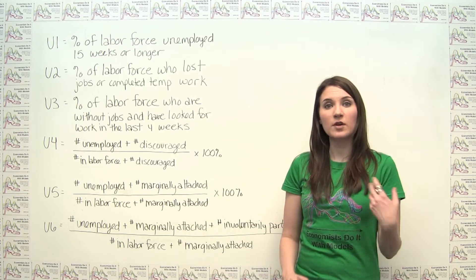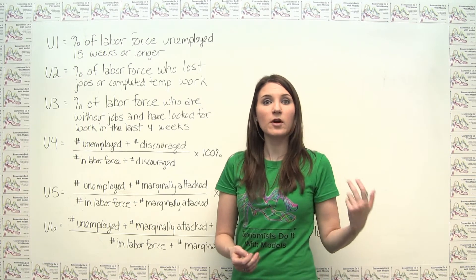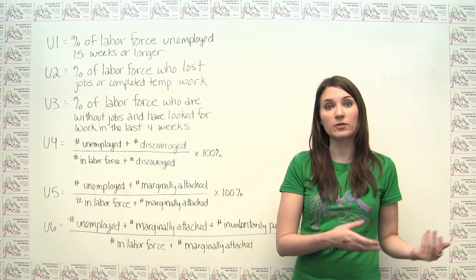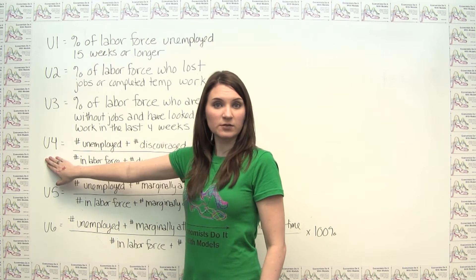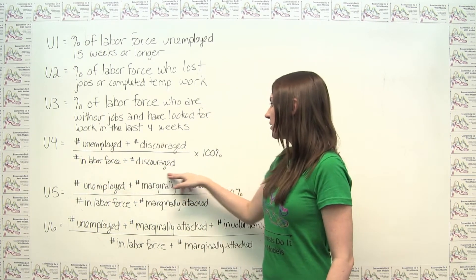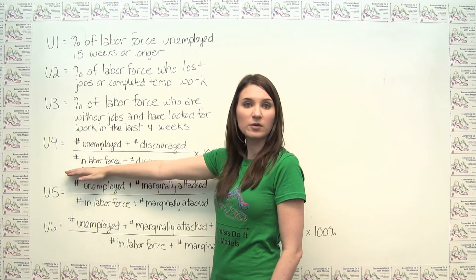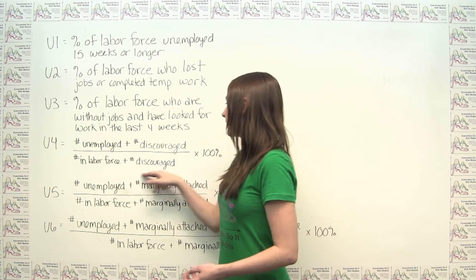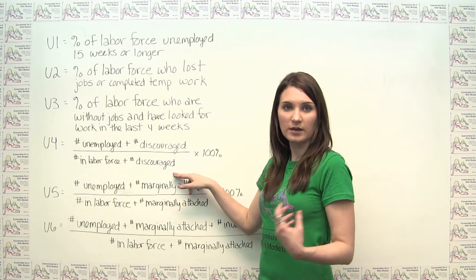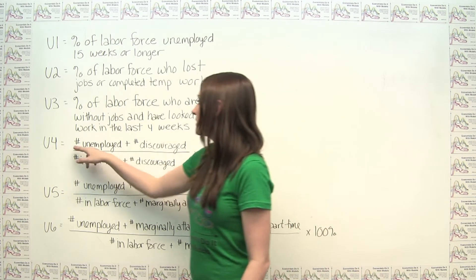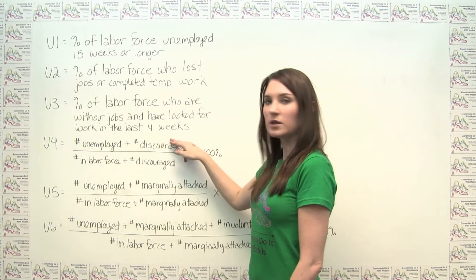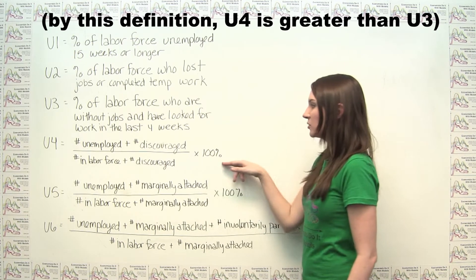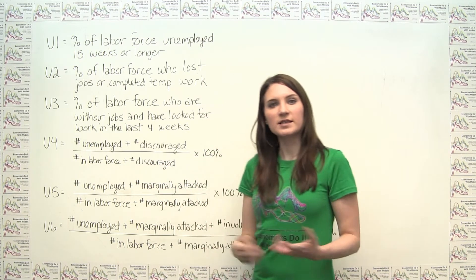The traditional measure of the unemployment rate tends to underestimate the true rate of unemployment, partly because it doesn't count discouraged workers as being in the labor force. U4 actually corrects for that. The denominator now includes not only those traditionally in the labor force — people either working or who have actively looked for work in the last four weeks — but also discouraged workers who have gotten frustrated and stopped looking for a job. So the numerator is all people who are either unemployed or discouraged, and the denominator is the labor force plus discouraged workers, times 100%.